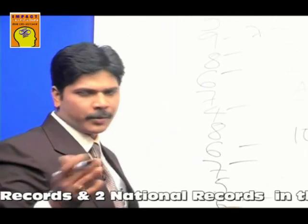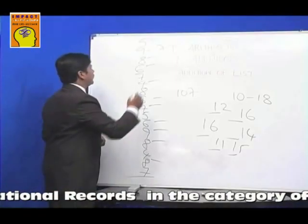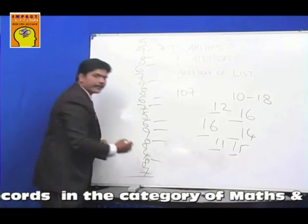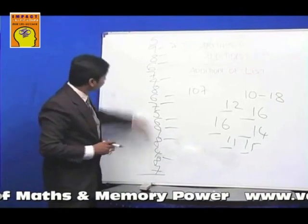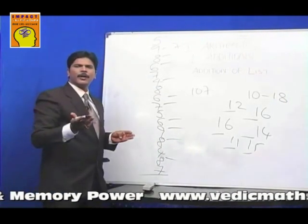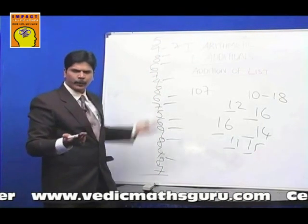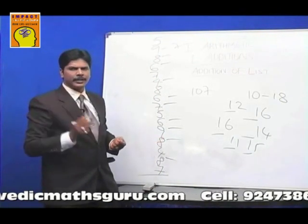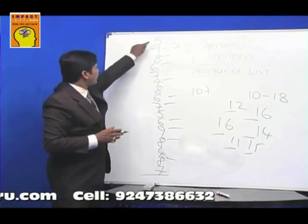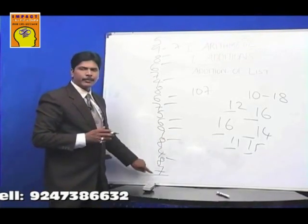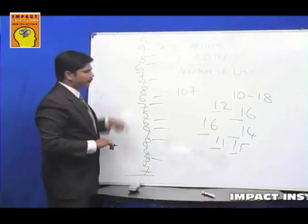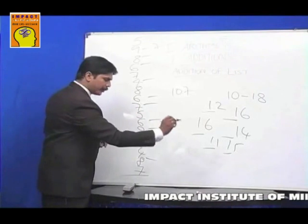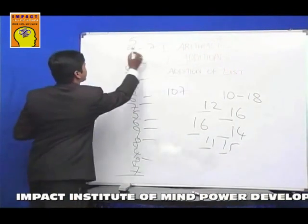Now let me show you how I did this addition so fast. Many people add the list from top to bottom, but Vedic Mathematics says: don't add from top to bottom, rather add from bottom to top. The reason is simple. When you add from top to bottom with your hand on the paper, your hand blocks the remaining numbers — the remaining numbers hide under your hand. So your eyesight is limited to only one number at a time and the brain catches numbers slowly.